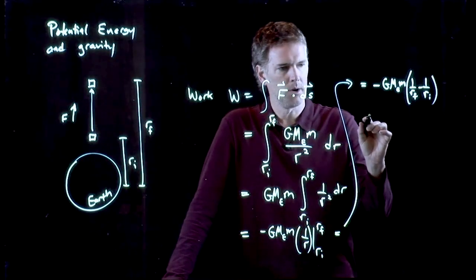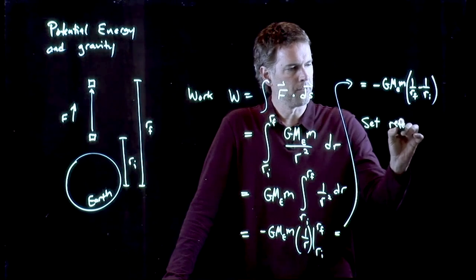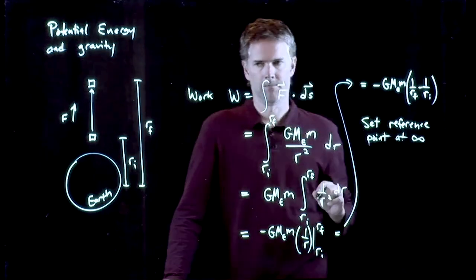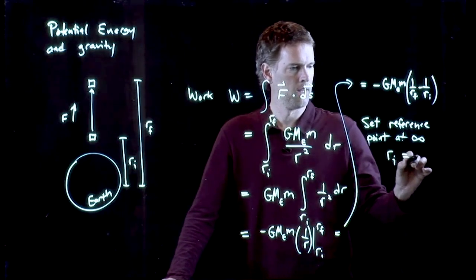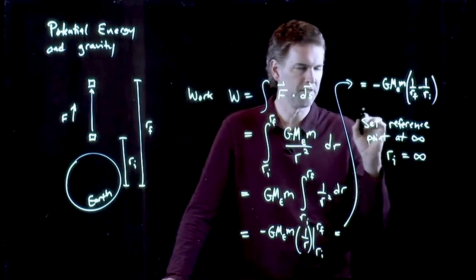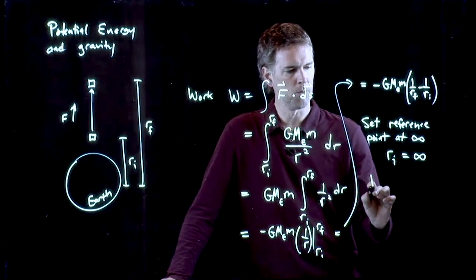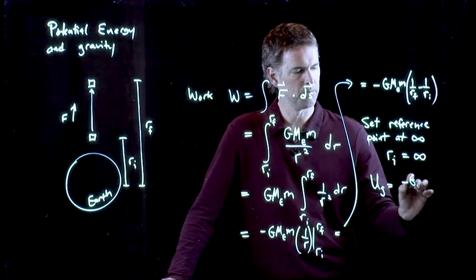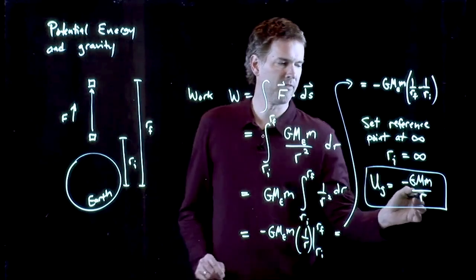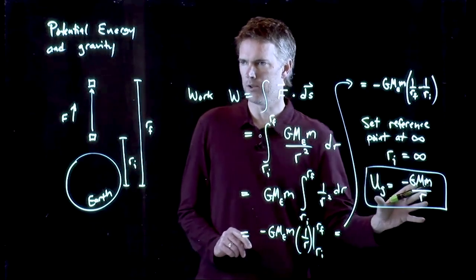But we like to make an approximation where we do the following. Let's set our reference point at infinity. So r_i is going to be infinity. Remember, potential energy, we said you can set your zero point wherever you like. Let's set our zero point out at infinity. And therefore, the work that you do or the gravitational potential energy is just this. We're only worried about that final position, r sub f. And if we write it in general, this is the gravitational potential energy of our system.